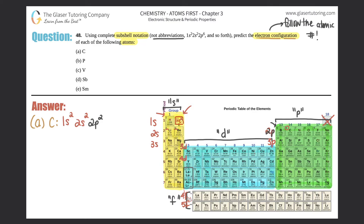Moving on to part b — phosphorus. Same process: start from 1 and go all the way to 15. Start with 1s, collect both boxes: 1s2. Drop down to number 3 — that's 2s, collect both: 2s2. Now you're at number 5.